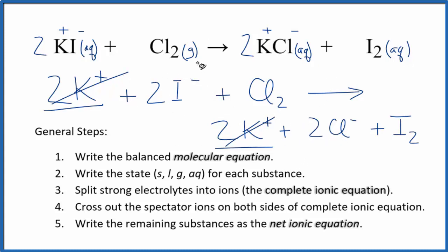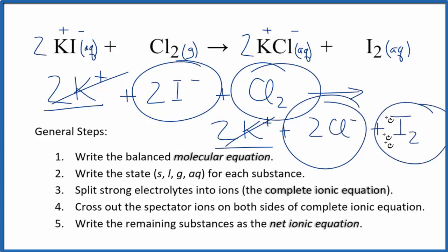And this will be our net ionic equation. We have our 2 iodide ions, chlorine, 2 chloride ions, very different than Cl₂, plus that aqueous iodide. Let me clean this up. We'll come back and have a net ionic equation for KI plus Cl₂.